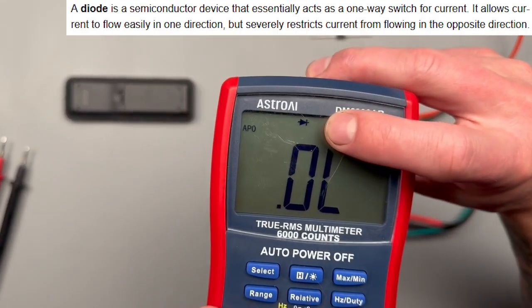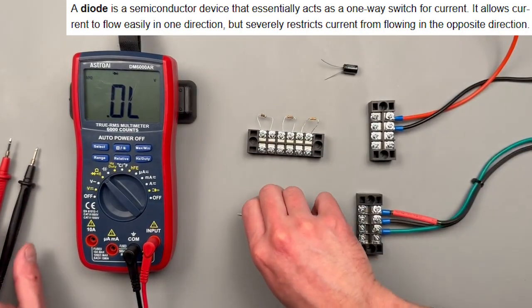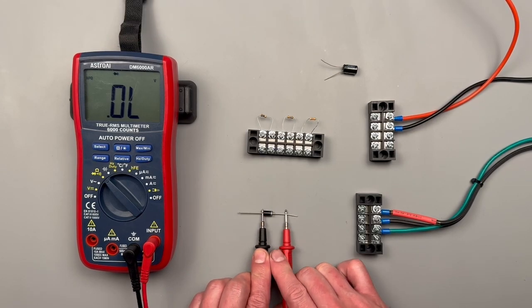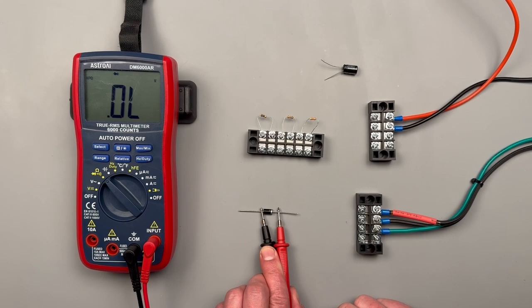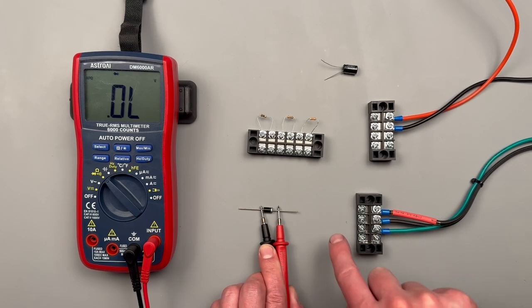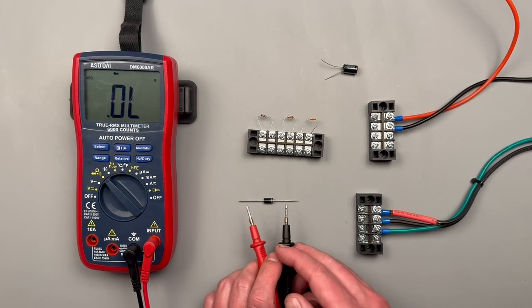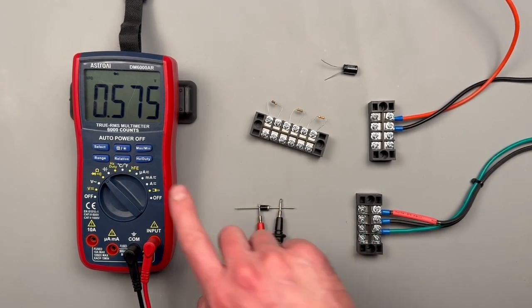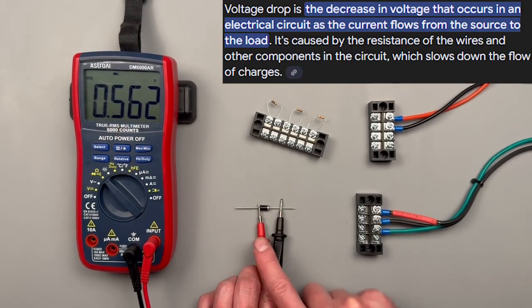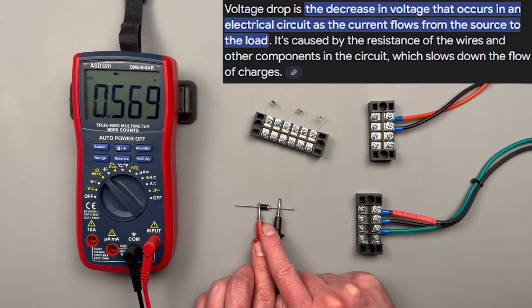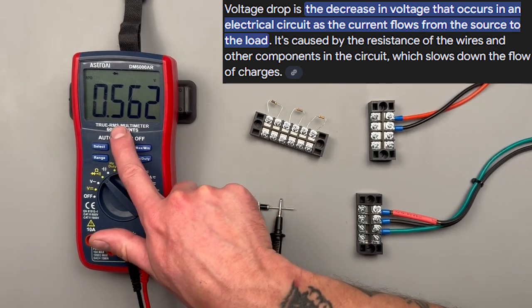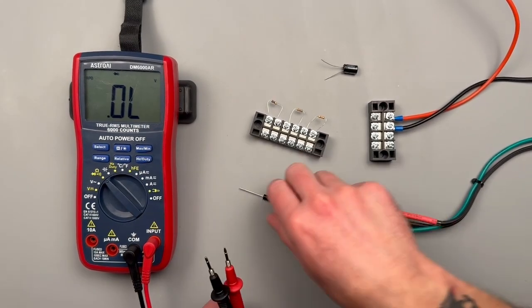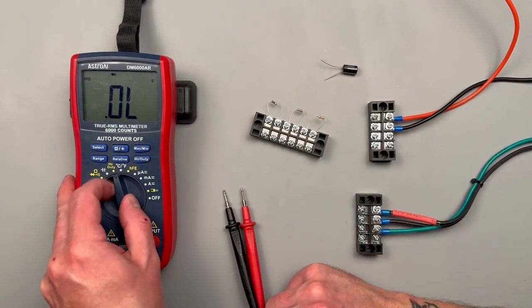We can hit the selector button again and it's going to go to our diode test setting. For diodes we want to test in both directions. This is saying OL because a diode only allows electricity to flow in one direction. But electricity can still flow in the other direction. The number that you're seeing here is the amount of voltage drop that's happening across the diode. For this style of diode we want to see about 500 to 800 millivolts of voltage drop. This diode tests good.